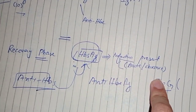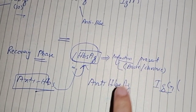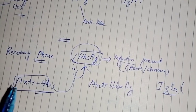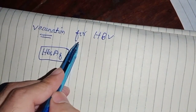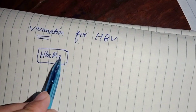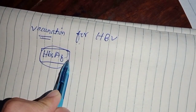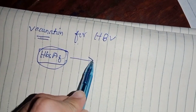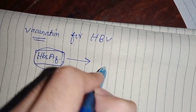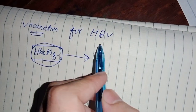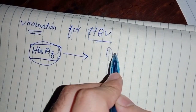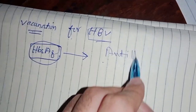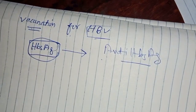Now let's talk about the serology in a vaccinated patient. The hepatitis B vaccine uses hepatitis B surface antigen — it is a recombinant vaccine in which hepatitis B surface antigen is injected into the body. Therefore, a vaccinated patient will only have antibodies against hepatitis B surface antigen (anti-HBs). That is the only serologic marker present in a vaccinated individual.